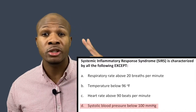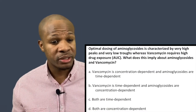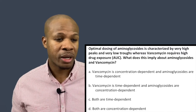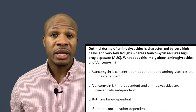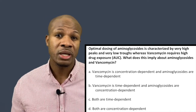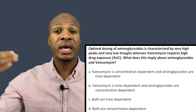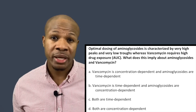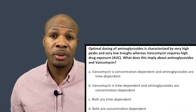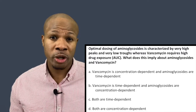Question number two states: optimal dosing of aminoglycosides is characterized by very high peaks and very low troughs, whereas vancomycin requires high drug exposure — AUC. What does this imply about aminoglycosides and vancomycin? Aminoglycosides — antibiotics against gram-negatives like Pseudomonas — include tobramycin, gentamicin, and amikacin. These drugs work best with a high peak concentration and a very low trough, whereas vancomycin works best when the patient has a lot of exposure to the drug — when the AUC is large.